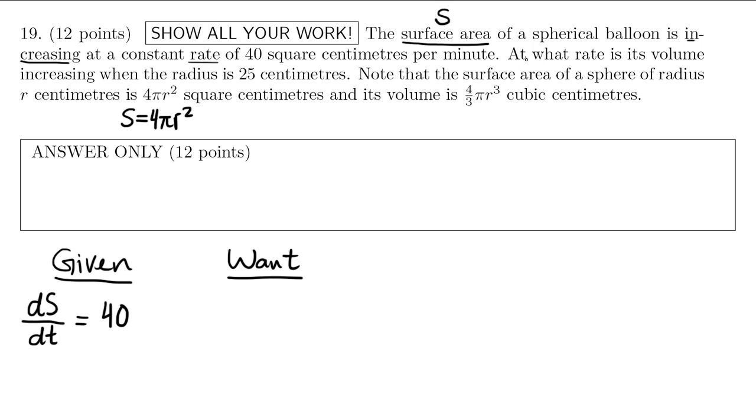What about the next sentence? At what rate, I think this is going to be what we want here, at what rate is the volume increasing when the radius is 25? So the volume here we're told is, let's write V for volume.